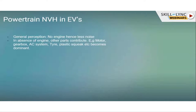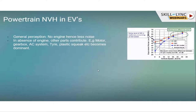In EVs, the general perception is that since there is no engine there is less noise, which is true to a certain level. But in the absence of an engine, the motor, gearbox, AC system, tires, or plastics become dominant and those noises become very annoying. At higher vehicle speeds, the noise level difference between an EV and an IC vehicle is not great and the problems are essentially the same. At lower vehicle speeds, there is a large difference, which is why EVs are perceived as less noisy — but we still have to study these noise sources.